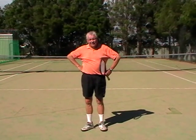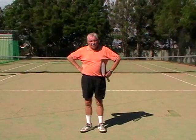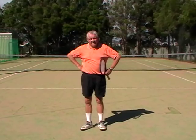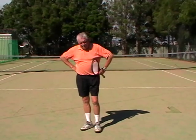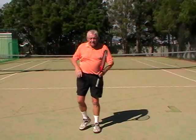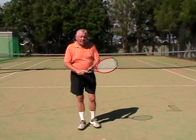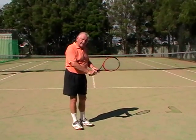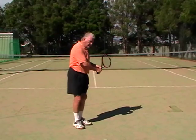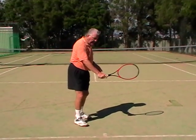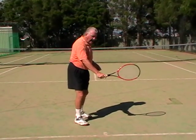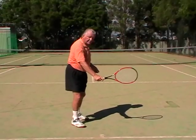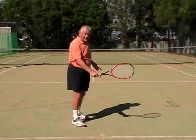Today we're going to talk about the position of contact, meaning the actual position when the racket makes contact with the ball. I'm doing a backhand, I'm swinging — now I've hit the ball there. That's the position of contact.